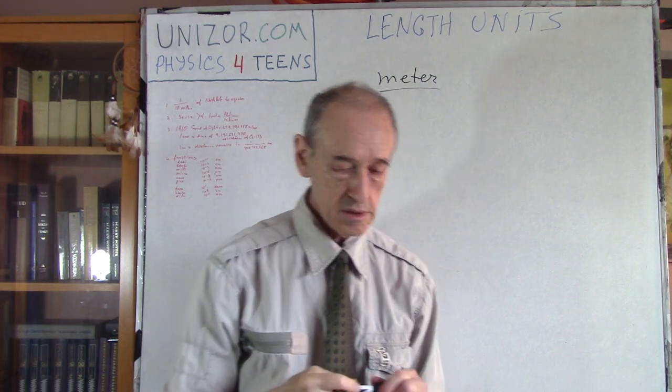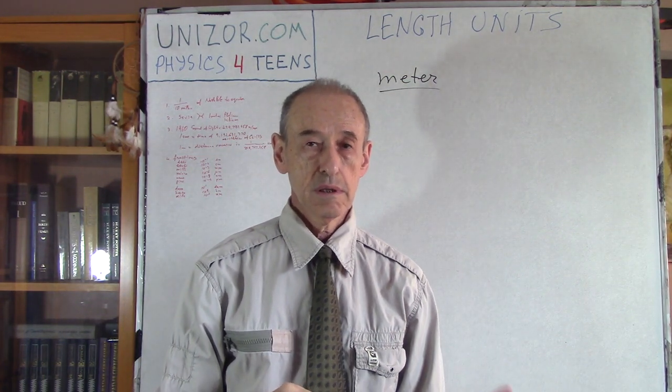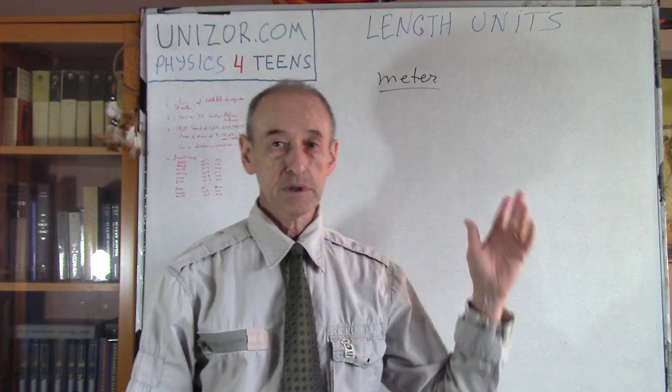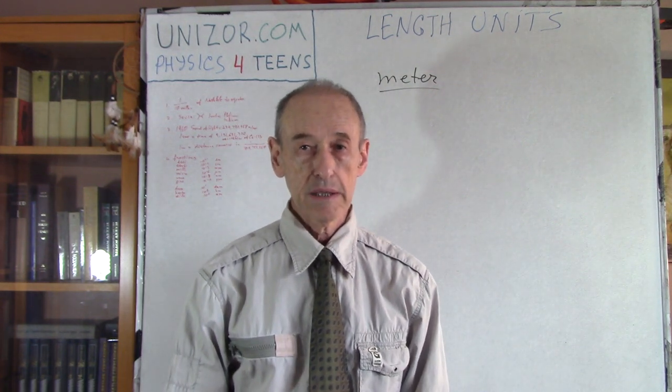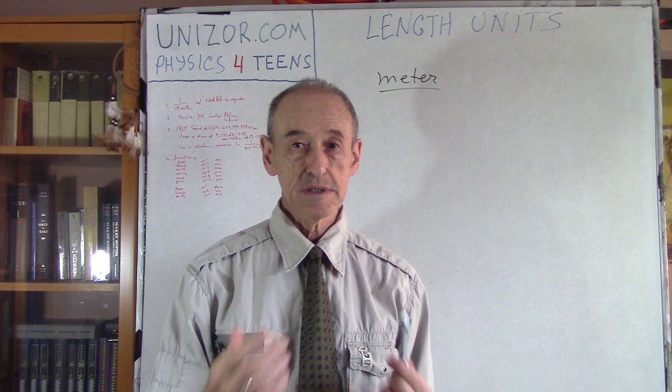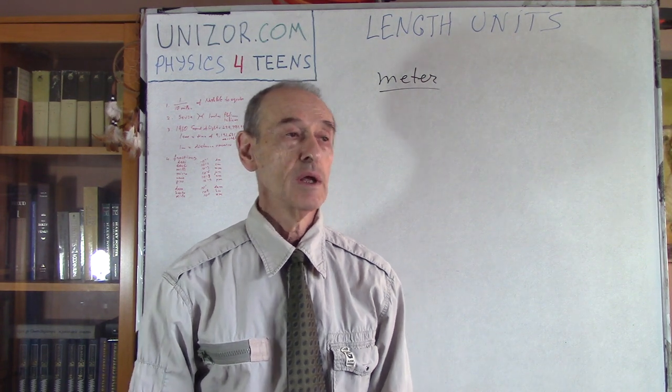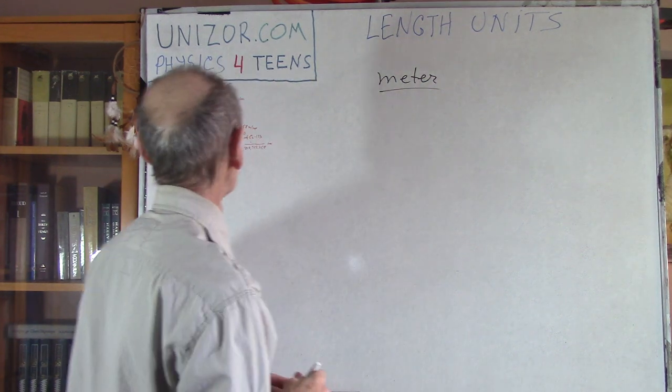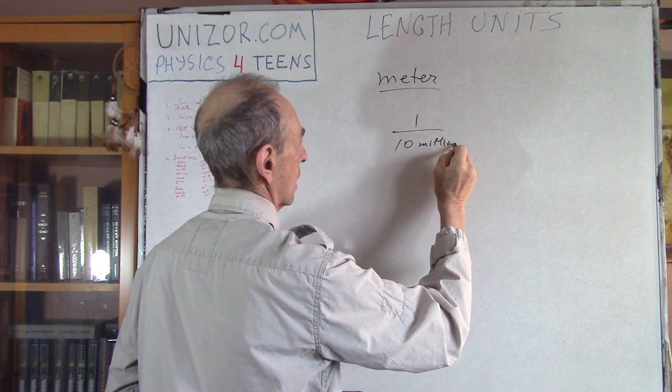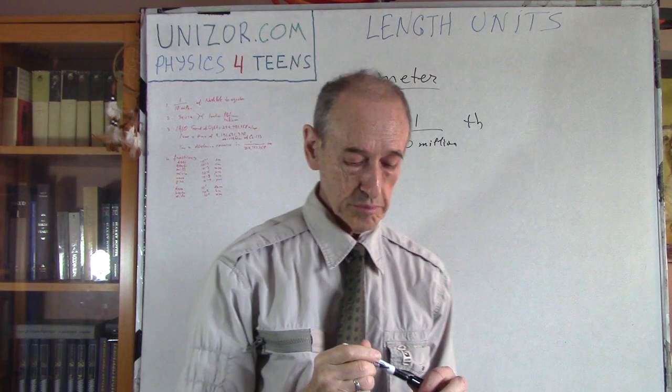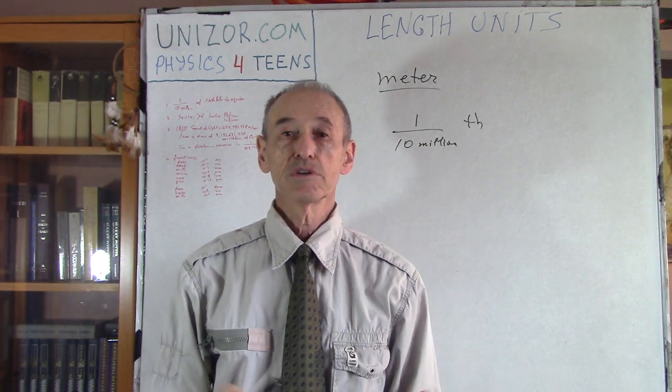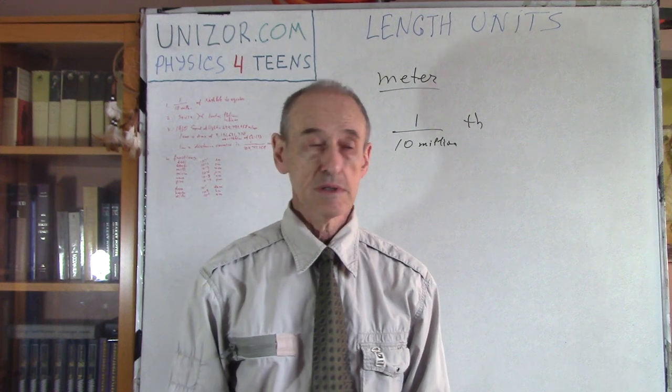In the United States, we are using less meter and more something like a foot or a mile. Everywhere else in the world, meter is really the de facto standard. So I will talk about how meter actually came to be and what is exactly the definition of the meter. One of the first definitions was something like 1/10,000,000 part of the distance between the North Pole and Equator. It was a decent definition, but obviously it is not really precise as we understand.